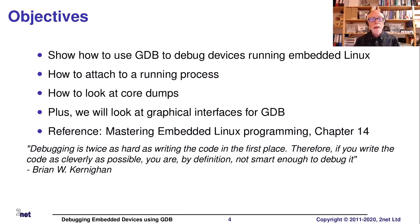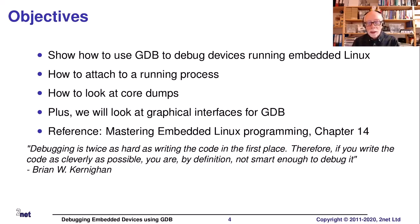This is all about debugging — bugs happen and we need to know how to find them. In this case we're going to be looking at interactive debugging using GDB. I want to highlight the quote from Brian Kernighan: 'Debugging is twice as hard as writing the code in the first place. Therefore, if you write the code as cleverly as possible, you are by definition not smart enough to debug it.' So make your code straightforward. Don't obfuscate. Do things in the best way possible.